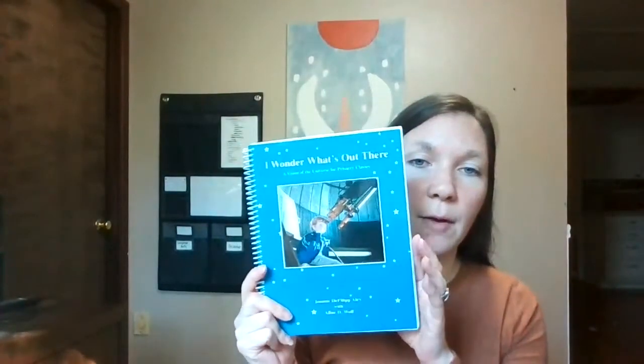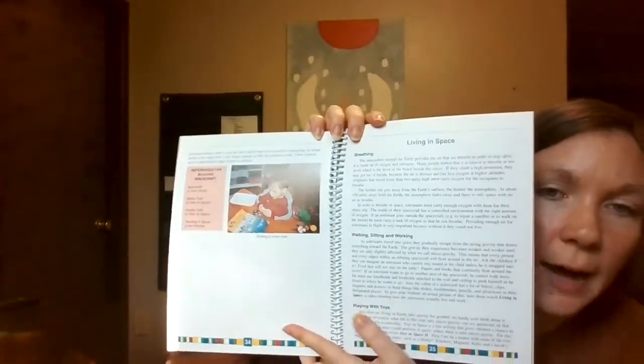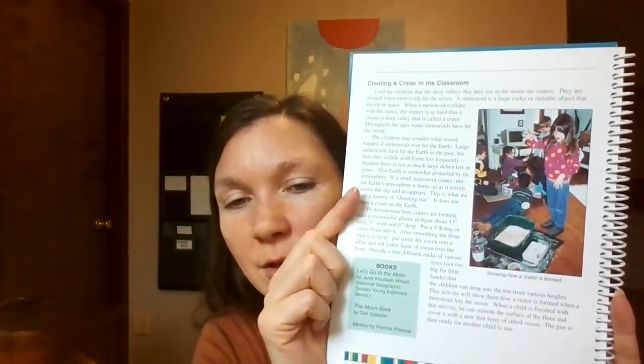The first one is this, I wonder what's out there, a vision of the universe for primary classes. It's got a lot of little activities that you can set up to do some hands-on exploration. It's got some songs and poems in there. It's got some pictures of what some of those activities would look like. I haven't used this one yet, but this one is around space. We're going to spend some time on space in the future and going to incorporate it then at that point. But I thought this would be great. Give me some ideas, some hands-on activities that won't be too challenging.